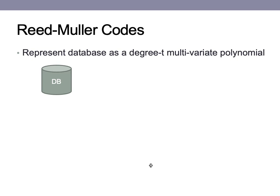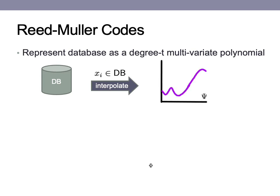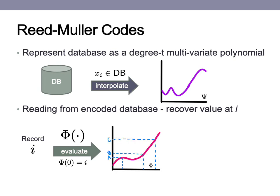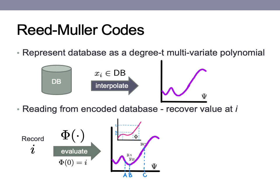In the setup process, we take in a database, and viewing each element of that database as a point, interpolate a degree-t polynomial we will call psi — this is what the server stores. When a client wishes to read the value at index i, the client first represents that index as a random polynomial b, also of degree t, that evaluates at zero to the index being read. The client evaluates this polynomial at several preset points to obtain outputs a, b, and c, which are the points the client asks the server to return the values of the database function at. The server obtains y_a, y_b, and y_c and sends them back to the client, who interpolates across these t points in order to recover the database value at index i.